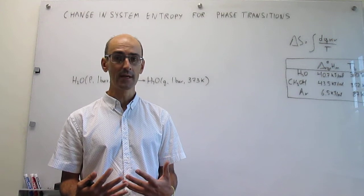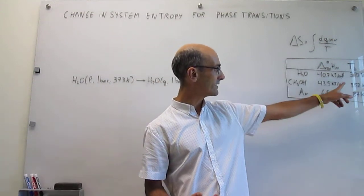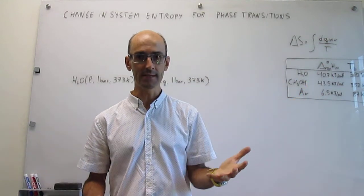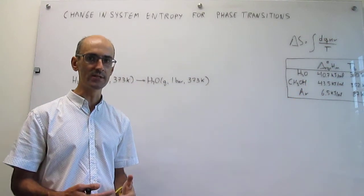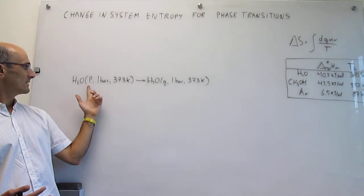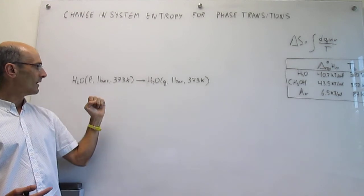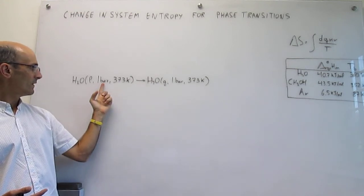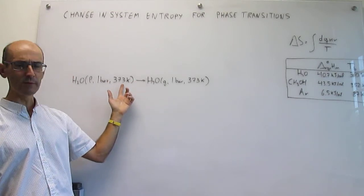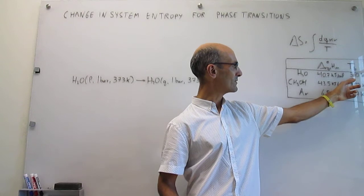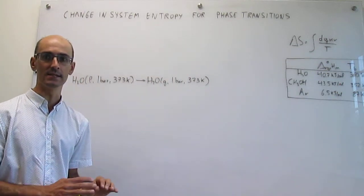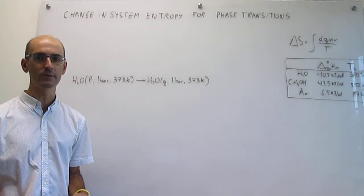To reiterate, equilibrium phase transitions are those occurring at the species-specific equilibrium temperatures at one bar of pressure. Here is an example of an equilibrium phase transition: water evaporating at one bar, and the temperature must be the equilibrium temperature. Going to the table, 373 Kelvin is indeed the equilibrium temperature for one bar, so this is the easy case — an equilibrium phase transition.